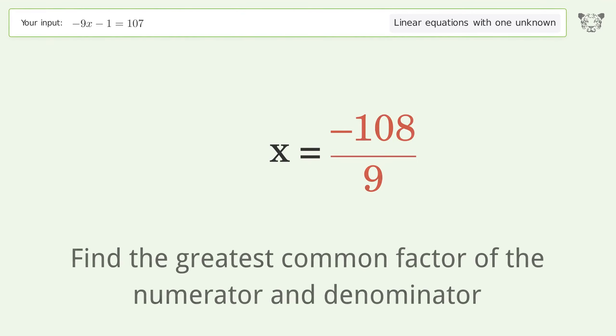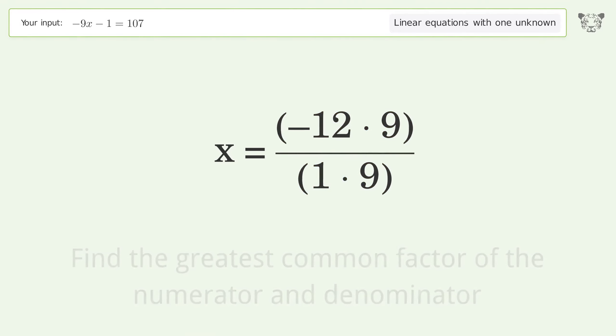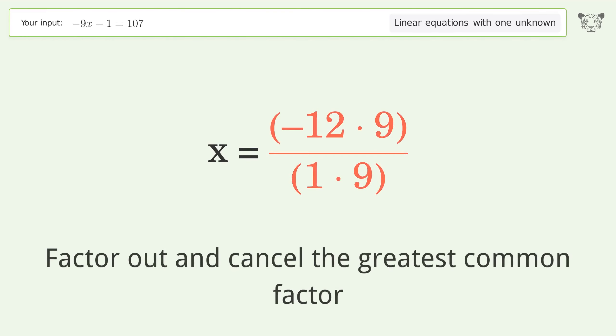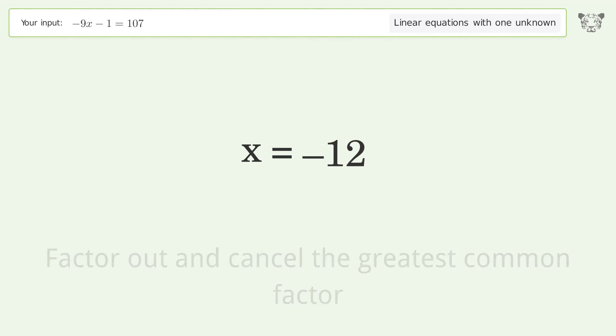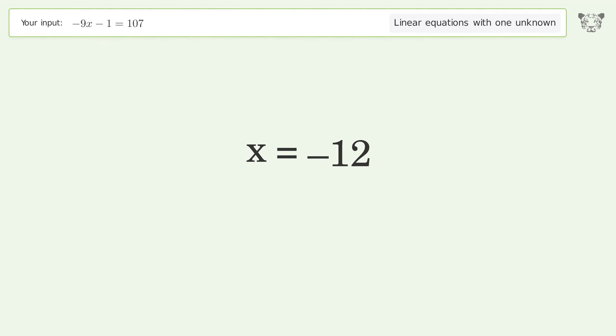Find the greatest common factor of the numerator and denominator, then factor out and cancel it. And so the final result is x equals negative 12.